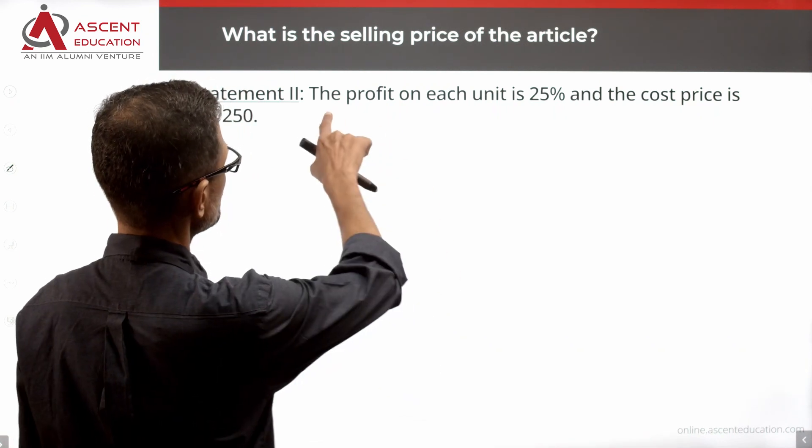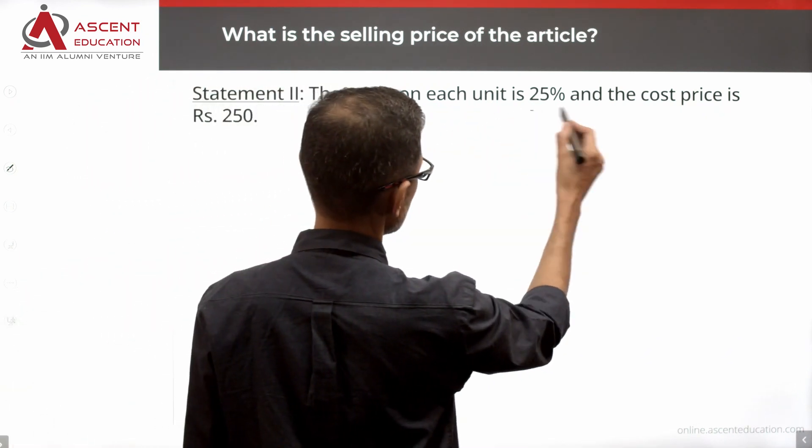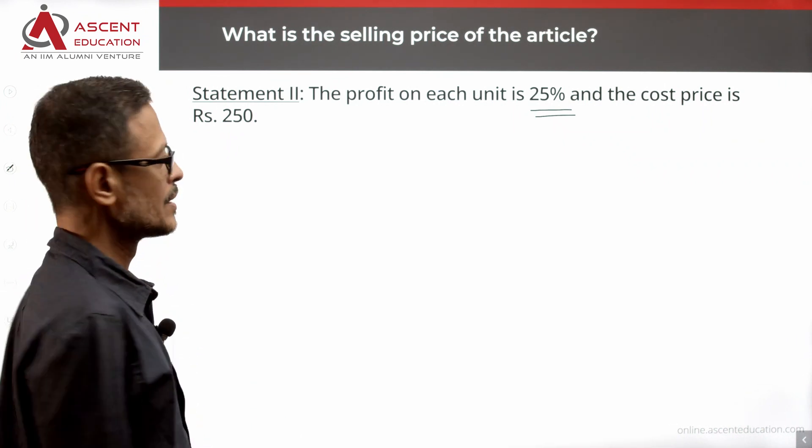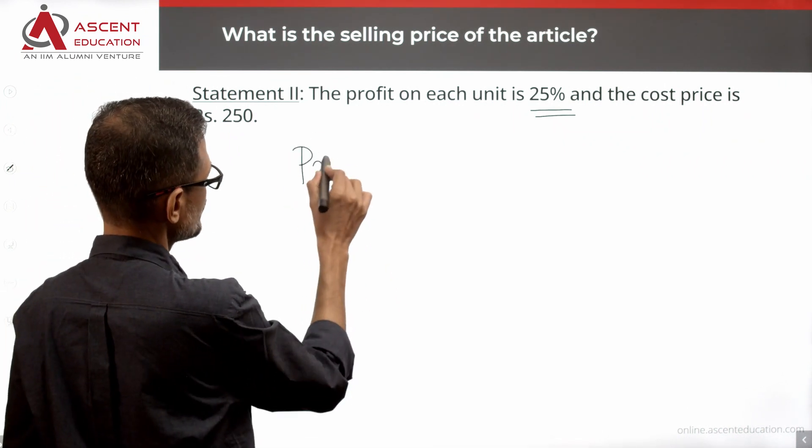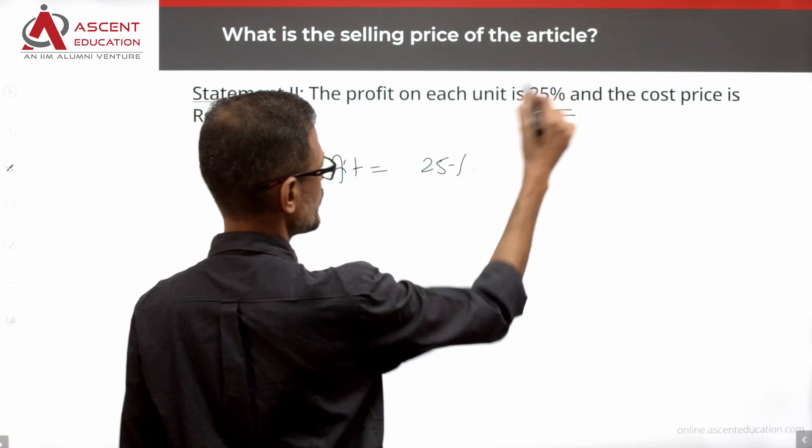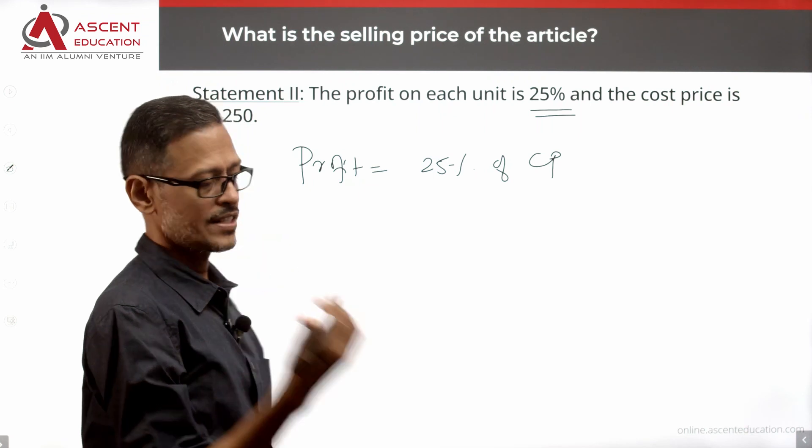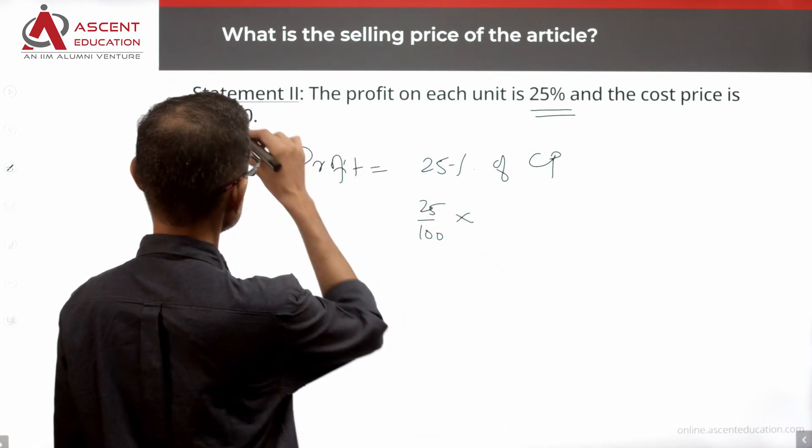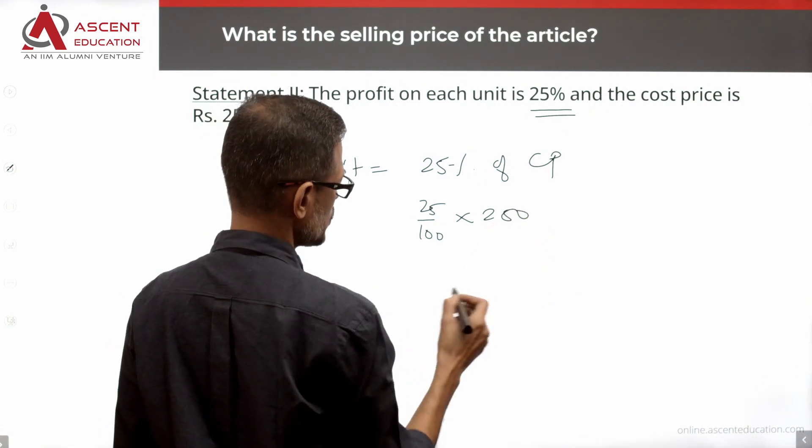Statement 2: The profit on each unit is 25% and the cost price is Rs. 250. So profit divided by 100 into cost price, that is equal to the profit amount.